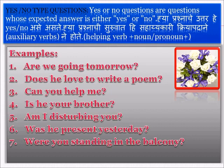The fifth example is 'Am I disturbing you?' The sixth is 'Was he present yesterday?' The seventh is 'Were you standing in the balcony?' These are the seven examples of the second type of interrogative sentence — the yes/no type questions. I hope you have understood the second type of sentence, that is the interrogative sentence.